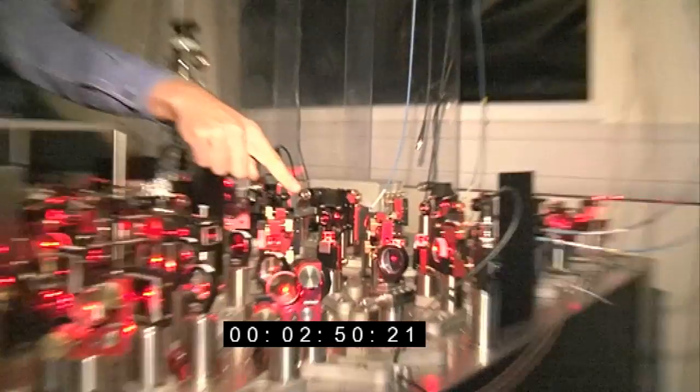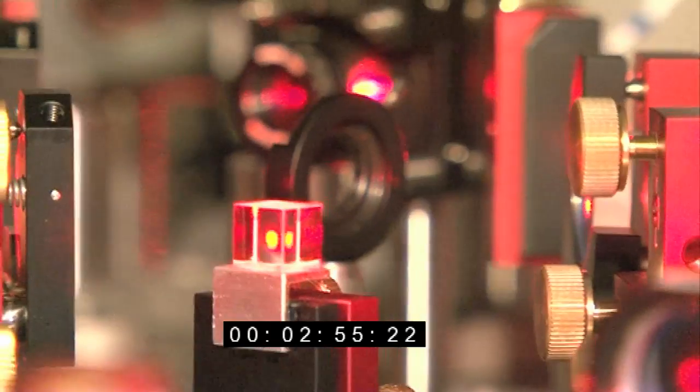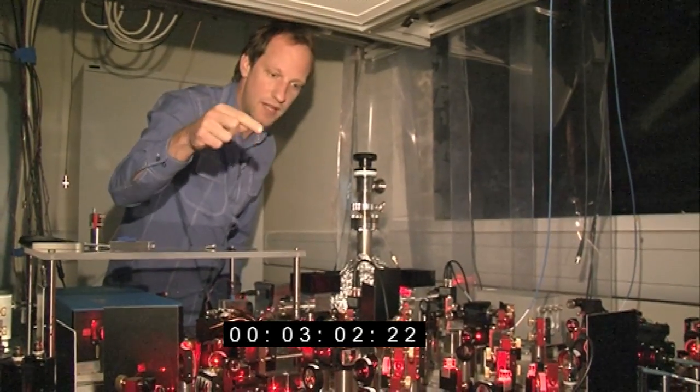Then we have these little cubes here. They're just beam splitters or, if you want, half-silvered mirrors where a part of the beam goes through and another part gets reflected. And then all it is is a geometrical assembly of steering beams in different ways.